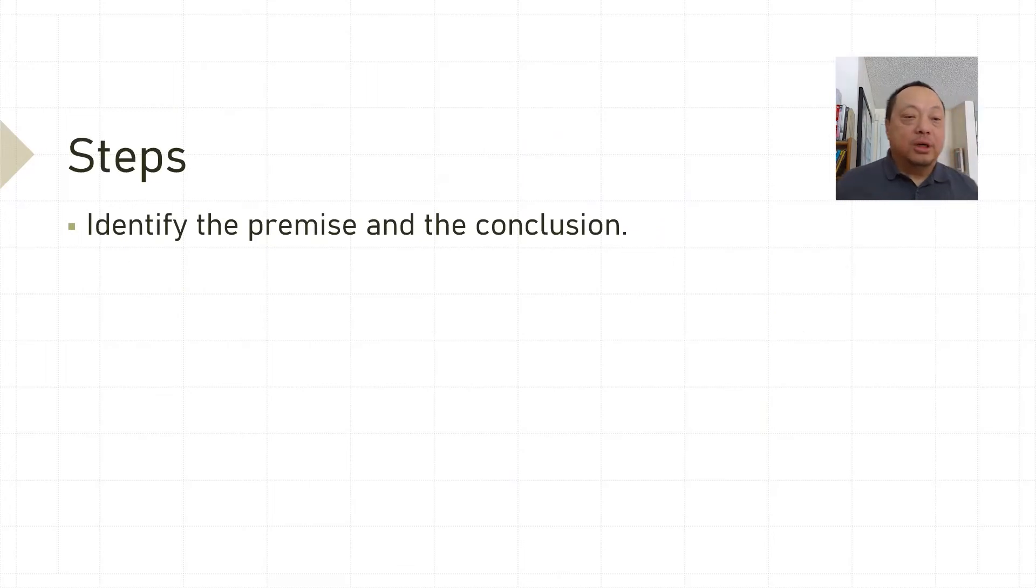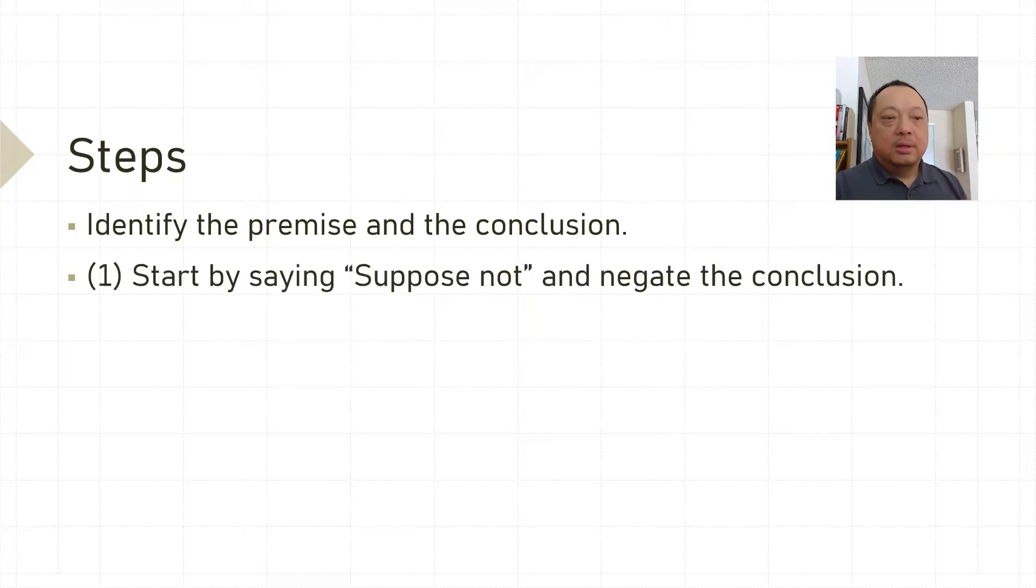These are the steps of a proof by contradiction. First, you need to clearly identify to yourself what's the premise and what's the conclusion. Start the proof by saying suppose not. This is obviously optional, but I highly recommend it.